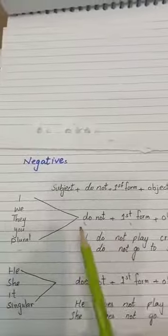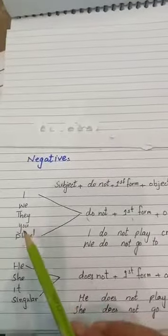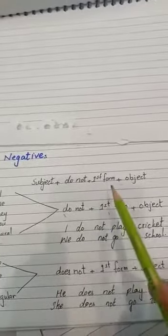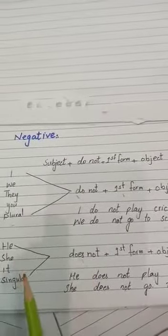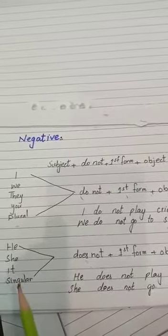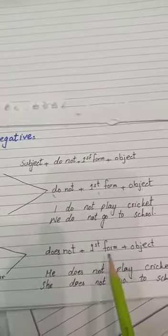So this will be: subject plus do not - I, we, they, or you - plus first form, plus object. And he, she, it, singular, any word which is subject, this one will also come. Then 'does not', plus first form, plus object. Like: I do not play cricket. We do not go to school. He does not play cricket. She does not go to school.